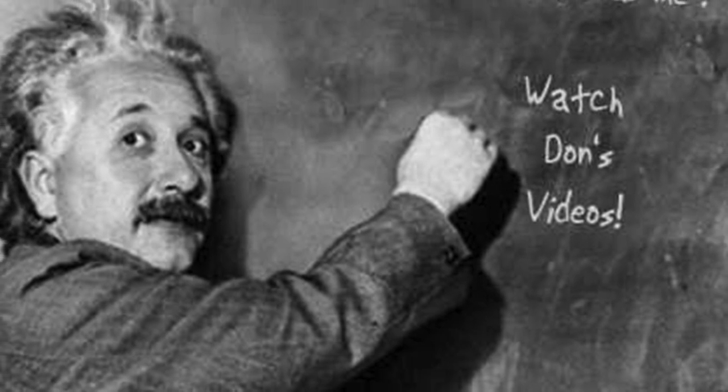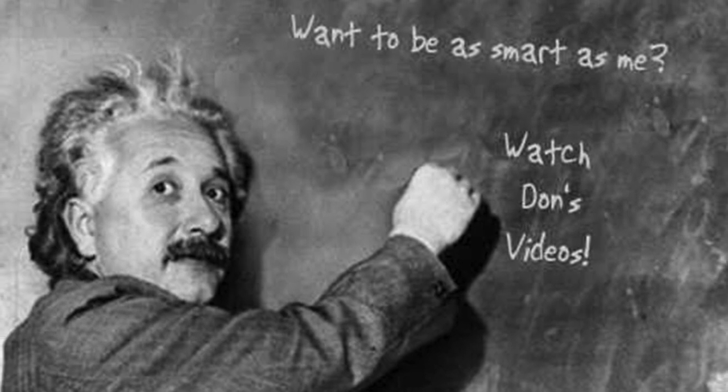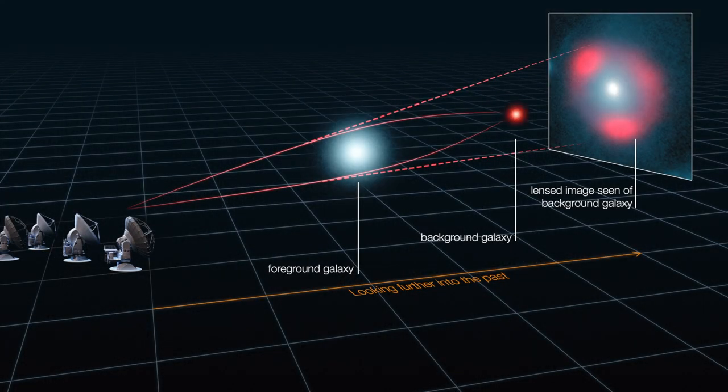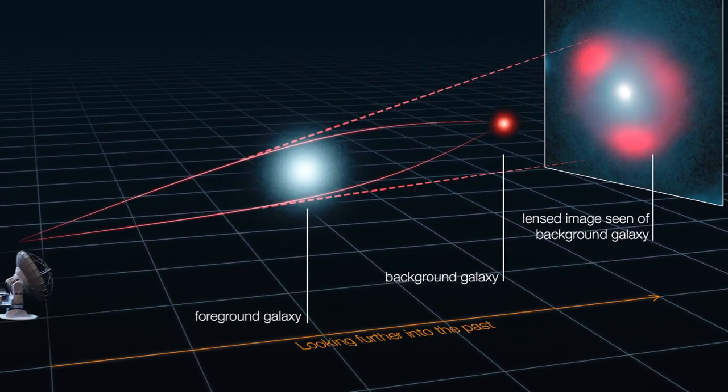In 1936, Einstein extended his idea to the situation where a distant mass and an even more distant mass were aligned along a line that passes through the Earth. Because light from the even more distant mass, which could be a galaxy or a quasar, is emitted in all directions, light emitted in many directions would all be bent by the intervening mass.